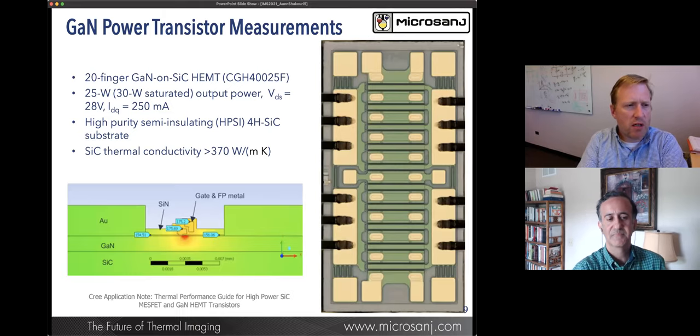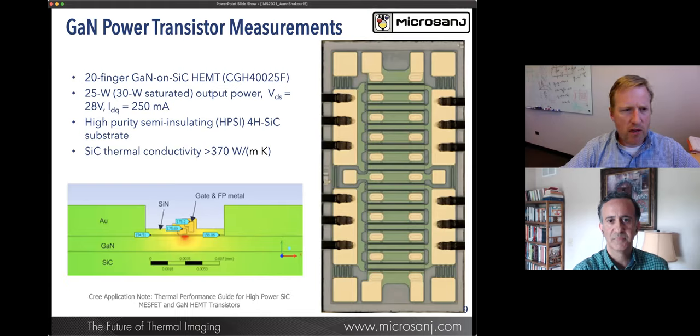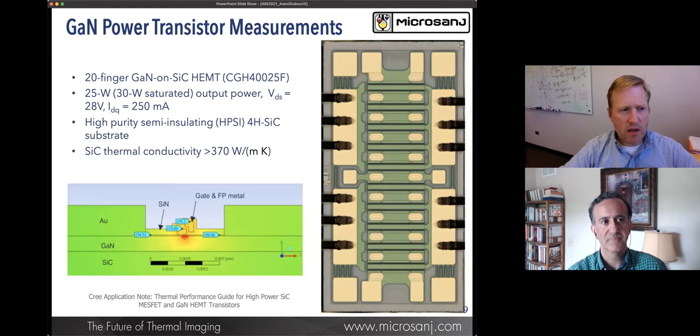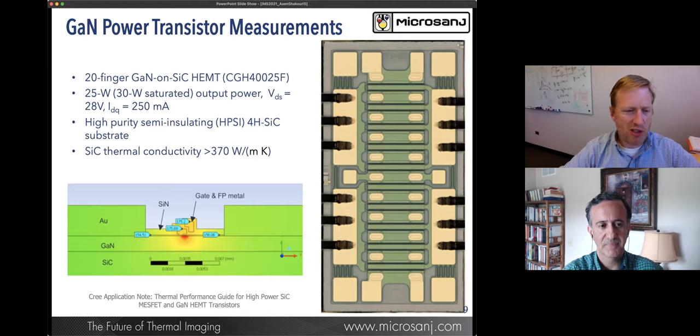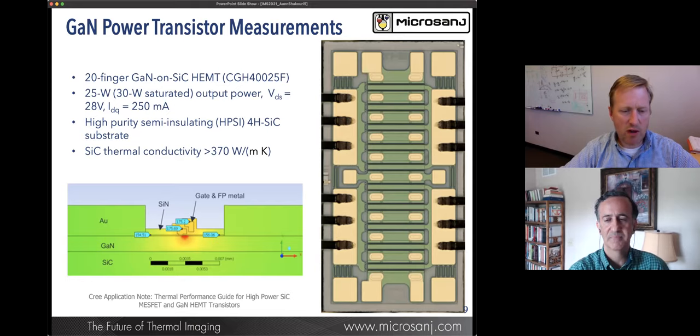We're going to move into talking about gallium nitride power transistors. Here we have a device that we bought, a GaN on silicon carbide from Cree. It's a 20 finger device with 25 watts, a 30 watt saturated power designed to operate at 28 volts with an IDQ of 250 milliamps. Here is a cross section from one of the Cree application notes where we expect the high temperature just on the edge of the gate nearest to the drain. With the resolution of the Microsange system, we can get right in between the gate and the drain and start to see from the top where that heat originates from.